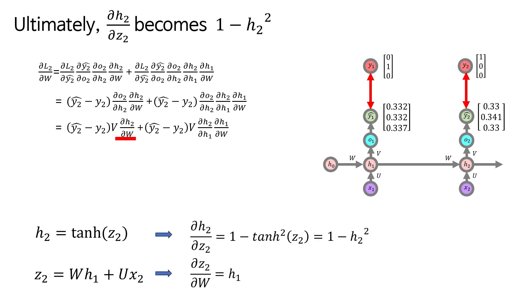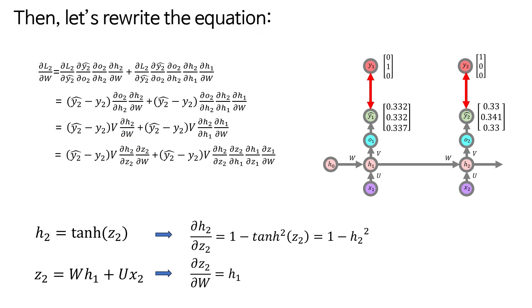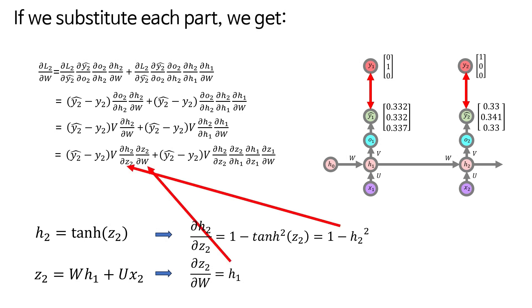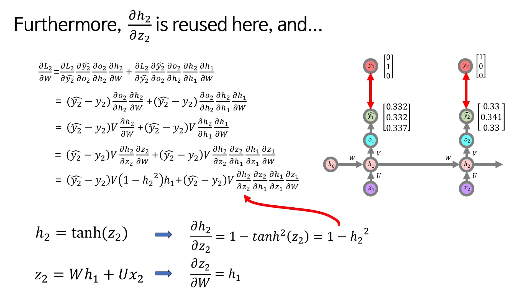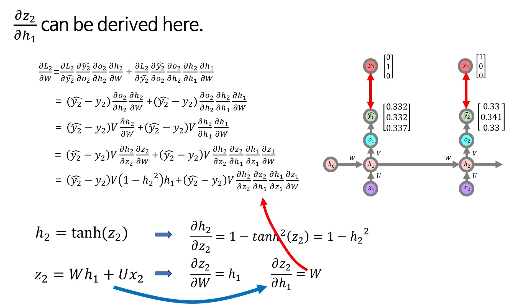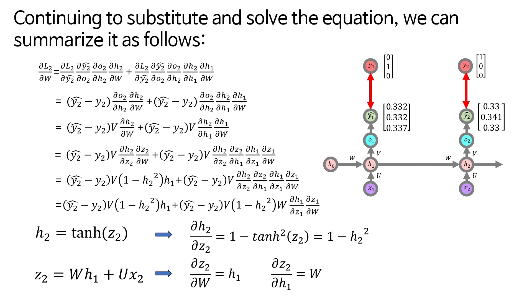Ultimately, del H2 del Z2 becomes 1 minus H2 square. Then, let's rewrite the equation. If we substitute each part, we get, you can see that it becomes like this. Furthermore, del H2 del Z2 is reused here, and del Z2 del H1 can be derived here. Continuing to substitute and solve the equation, we can summarize it as follows. Now, let's start plugging in values from this point.